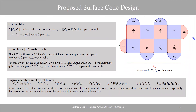The general premise is to make d_x by d_z surface codes that are rectangular, corresponding to the level of asymmetry in noise. We will have three logical Z errors along the shorter dimension, but many more logical X errors because we widened the lattice — this will result in the asymmetric code being slightly worse at correcting X errors.